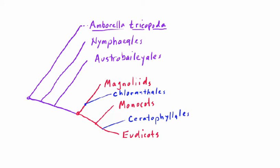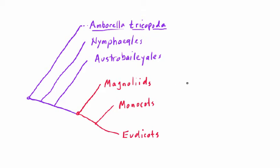But these are really minor lineages — Chloranthales and Ceratophyllales can be safely swept under the rug. We're going to be focusing our efforts on the three big groups, and the push in this video is going to be towards the Magnoliids. But there are a few general lessons we need to cover first.